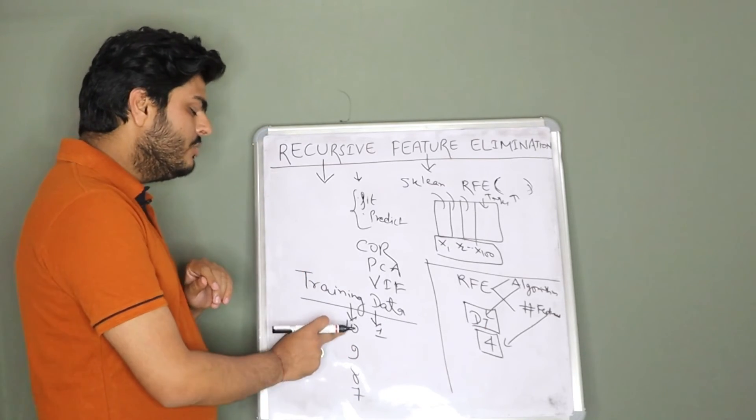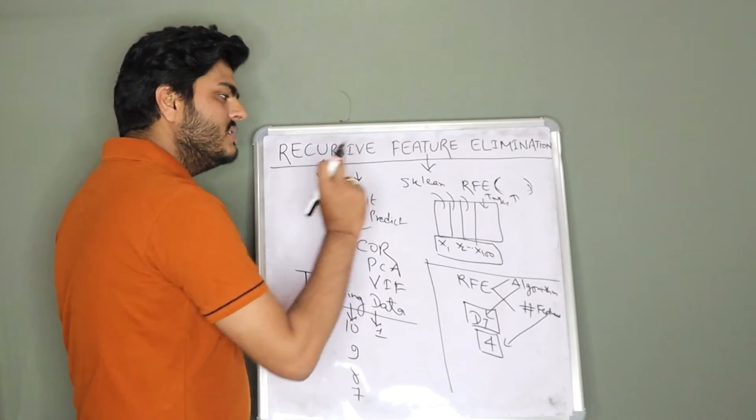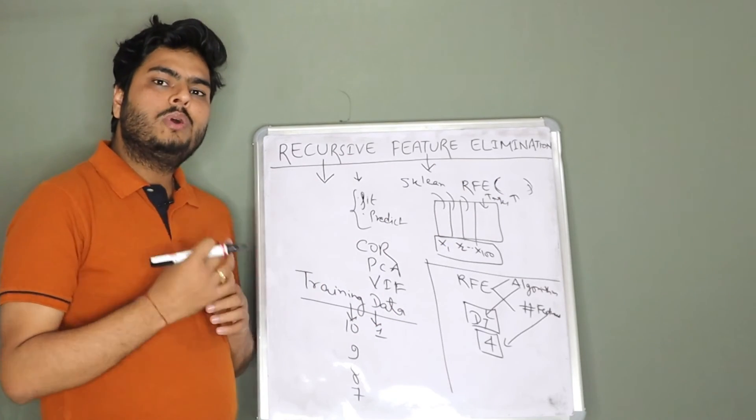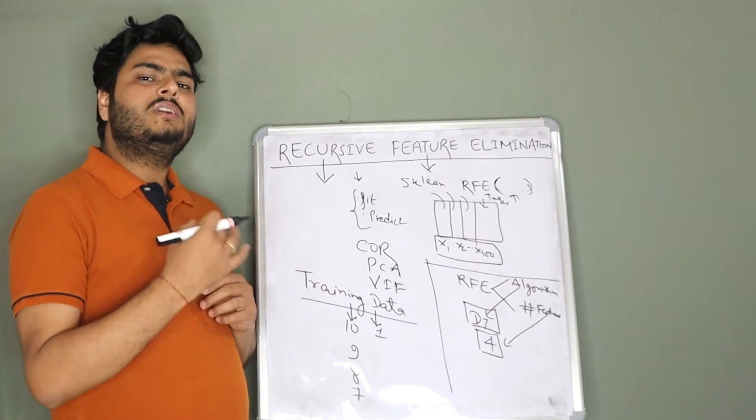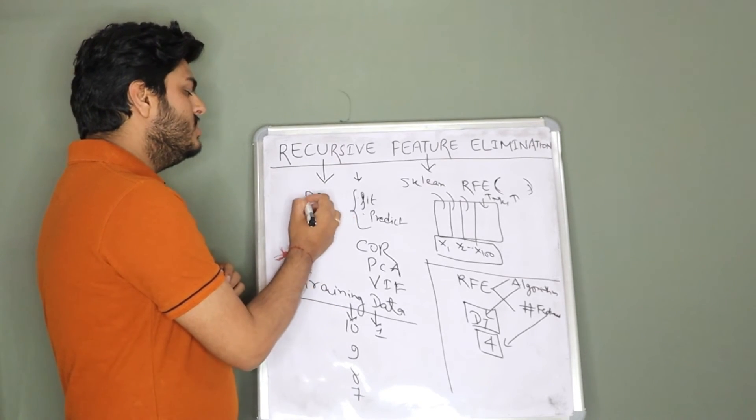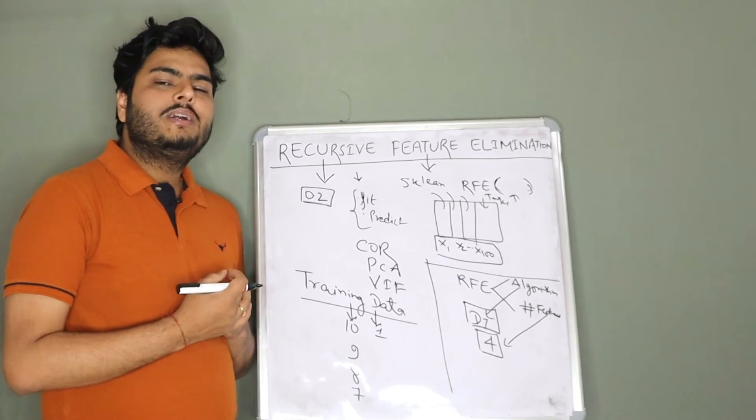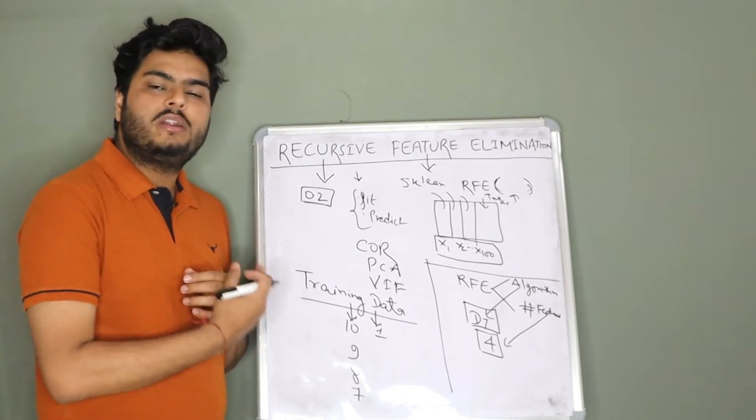Now, here I am removing one one feature. There is a parameter which you can set in RFE sklearn which tells you want to remove one feature in one shot or you want to remove certain percentage of features. For example, if I set that parameter as 0.2, it tells that remove 20 percent least important features in every iteration.